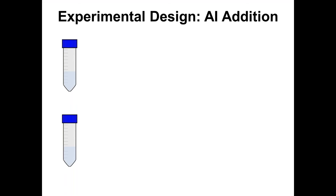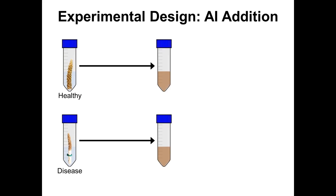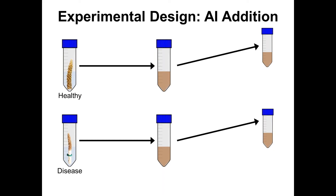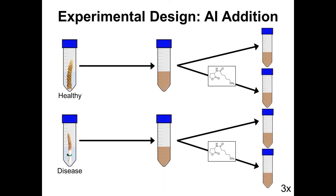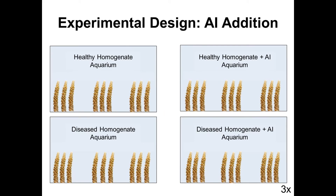For my first experiment, healthy and diseased corals were collected from Bocas del Toro, Panama in 2014. I homogenized these corals — basically I put pieces of coral into a 50 mL falcon tube and shook them really hard for a few minutes — stripping all the tissue from the corals to produce a slurry of coral tissue and bacteria. I split the healthy and diseased homogenates in half: half were left alone and half were supplied with autoinducers, giving me four treatments: healthy alone, healthy plus autoinducer, disease alone, and disease plus autoinducer. These four treatments were dosed onto healthy corals in aquaria, which I monitored for disease signs over two weeks.